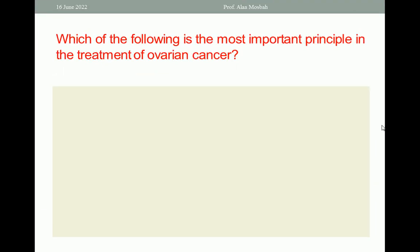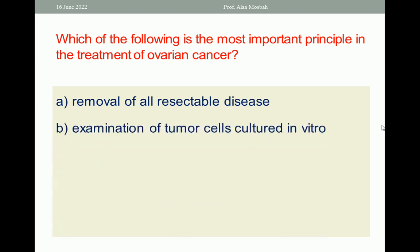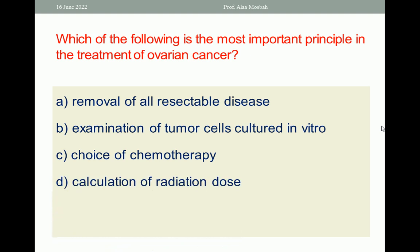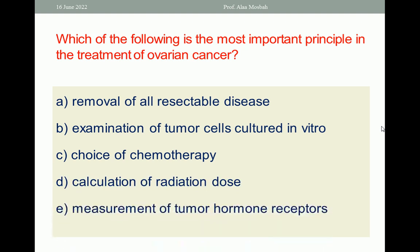Which of the following is the most important principle in the treatment of ovarian cancer? A. Removal of all resectable disease; B. Examination of tumor cells cultured in vitro; C. Choice of chemotherapy; D. Calculation of radiation dose; E. Measurement of tumor hormone receptors. The best one response here is A — removal of all resectable disease.